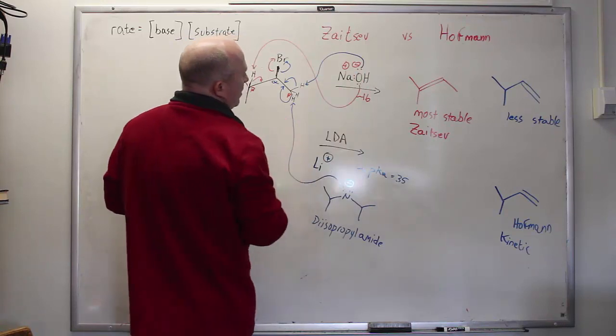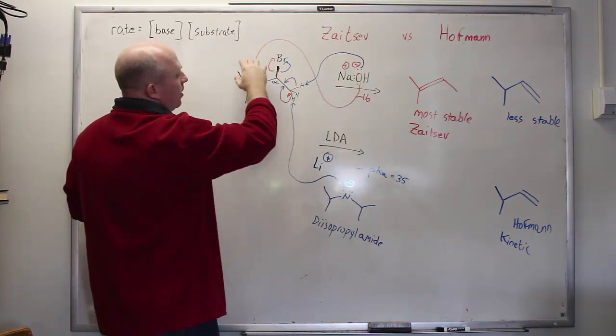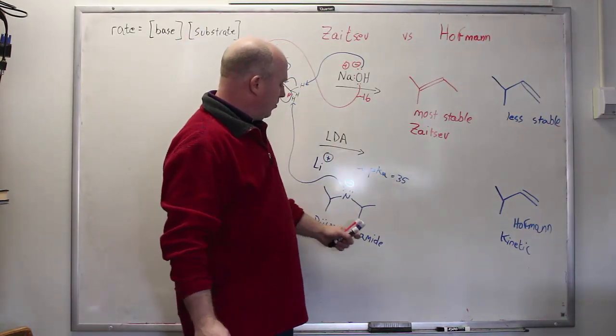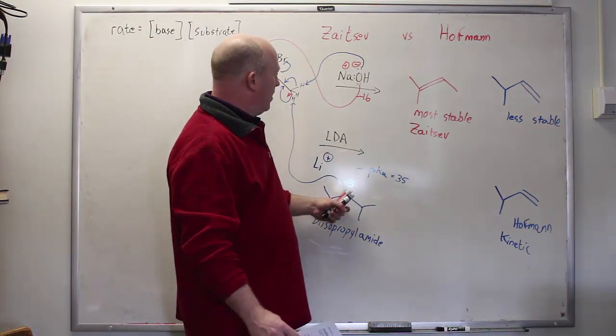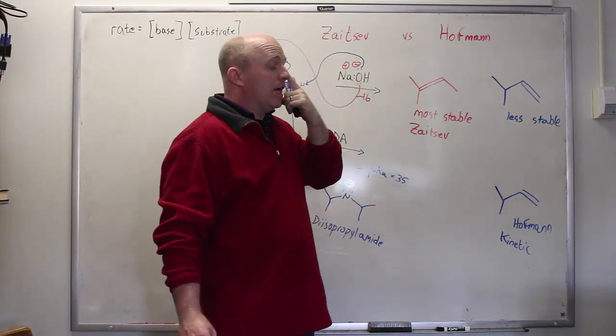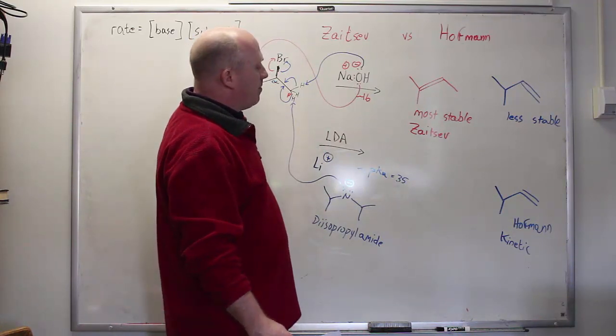Whereas if you allow the relatively milder hydroxide to come in, it will search for essentially the thermodynamic most stable product. In principle, this relatively large base could happen to abstract that proton and lead to the more stable thermodynamic product. In practice, however, it's so congested that this never happens. This energy of the transition state is raised high enough that it essentially never happens.